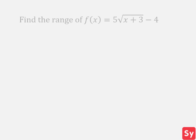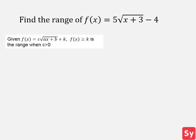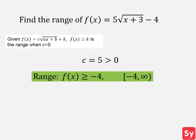Let's see some examples. First example: find the range of f(x) equals 5 times the square root of x plus 3 minus 4. For radical functions, we know the range is when f(x) is greater than or equal to k when c is greater than 0. Since 5 is greater than 0, we know that the range is when f(x) is greater than or equal to negative 4.